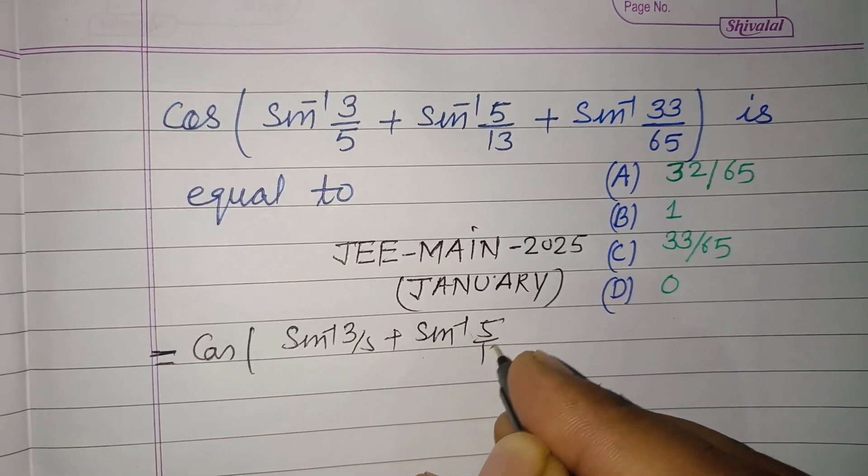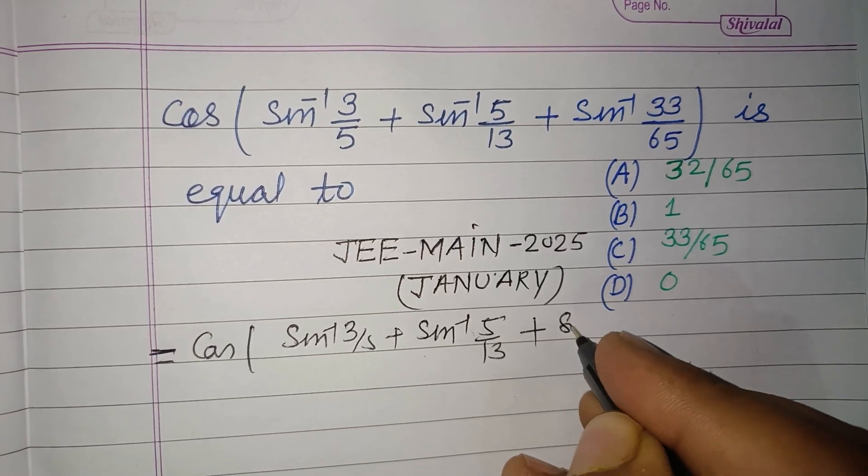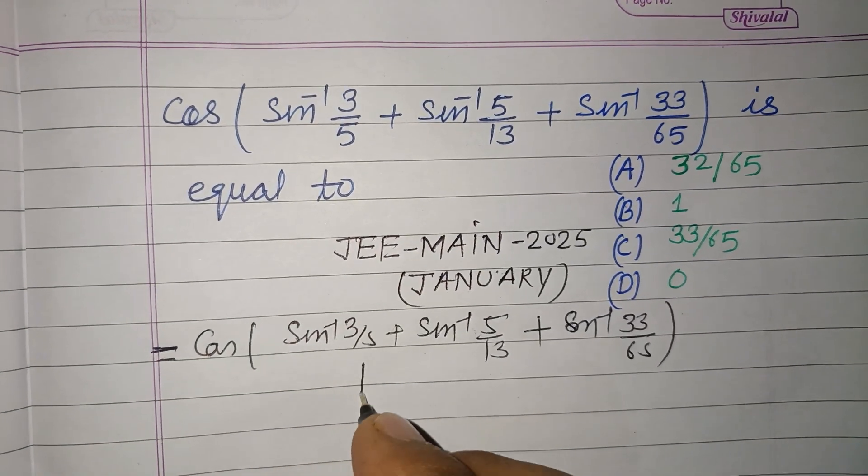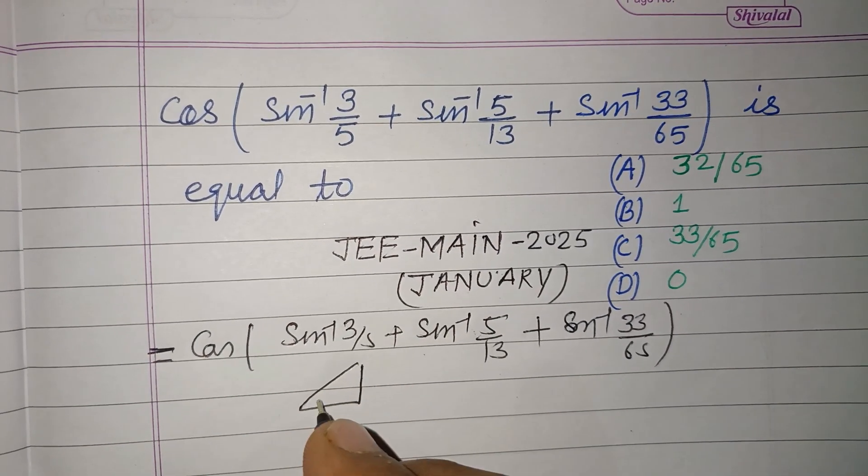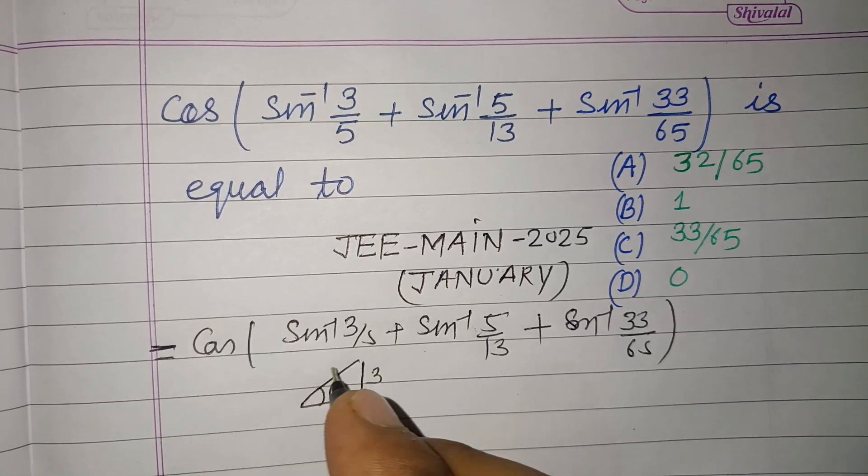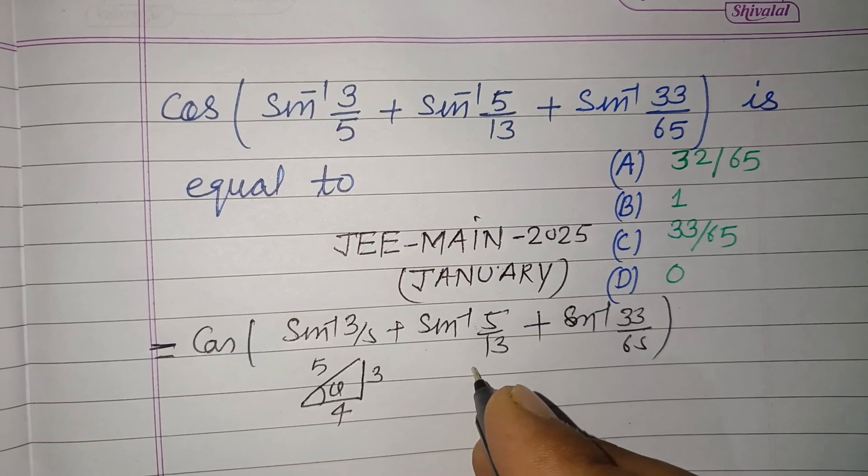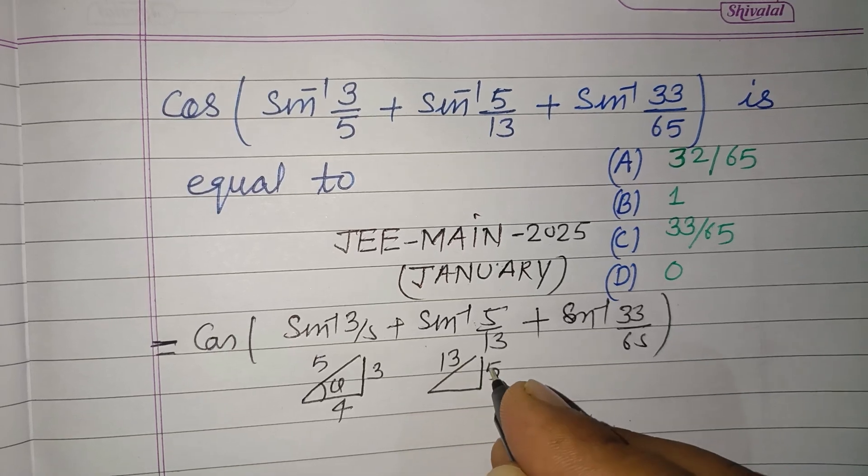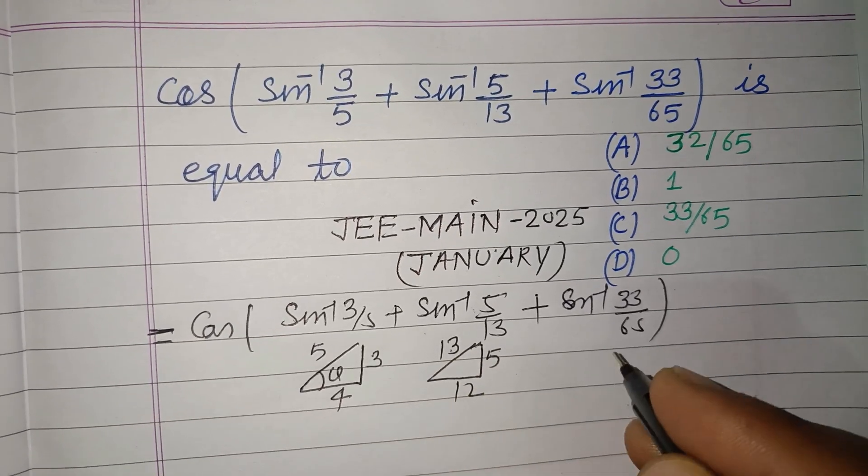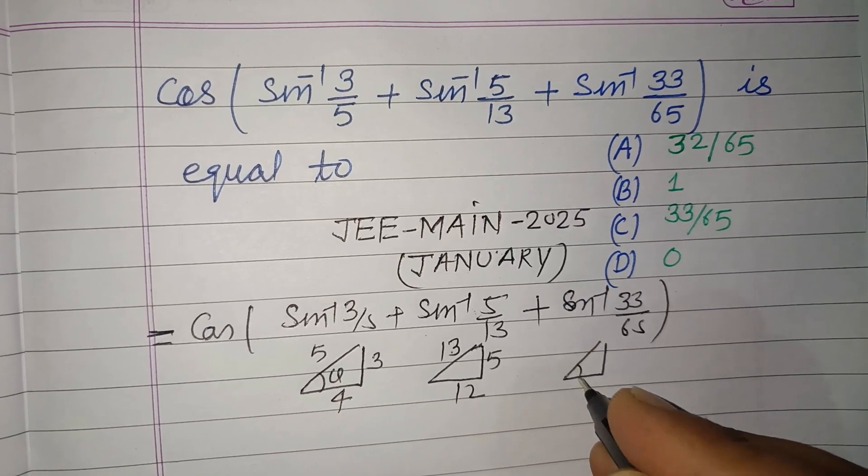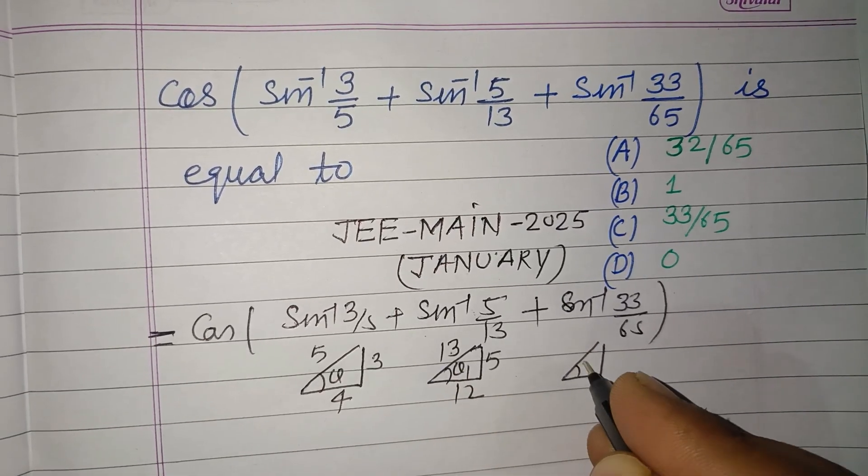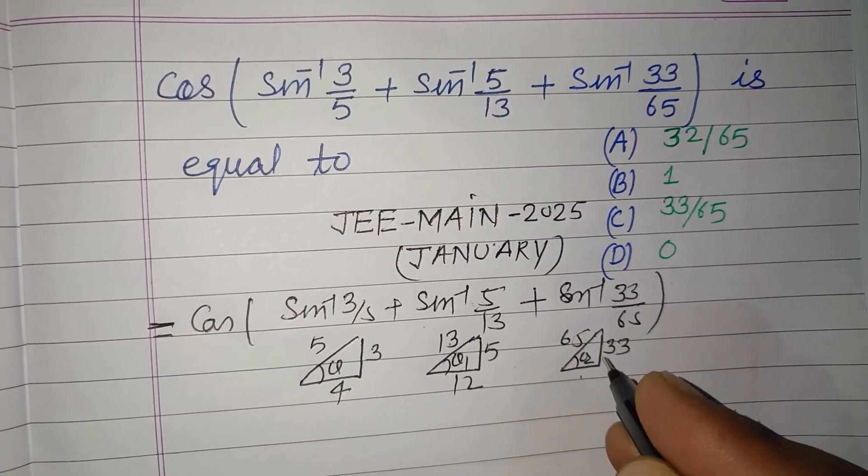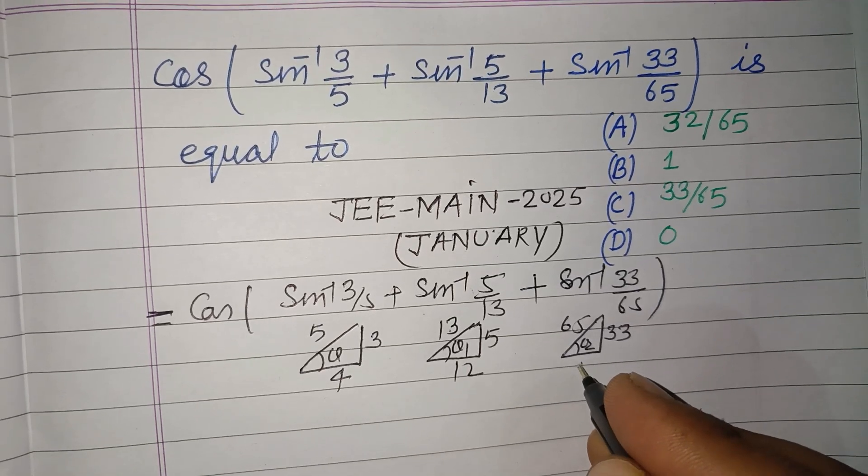If this is sin⁻¹ and this angle is θ, then this is 3, this is 5, and this is 4. For this, this is 5 perpendicular, hypotenuse, this becomes 12. And for this, if this is θ₁, this is θ₂, this is 33 upon 65. If you find this using Pythagorean theorem, you will get this as 56.